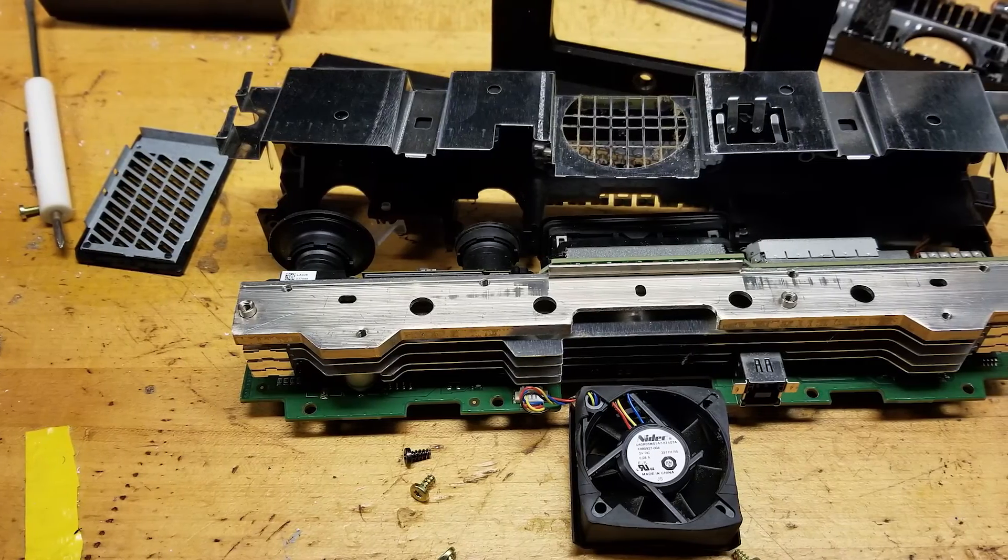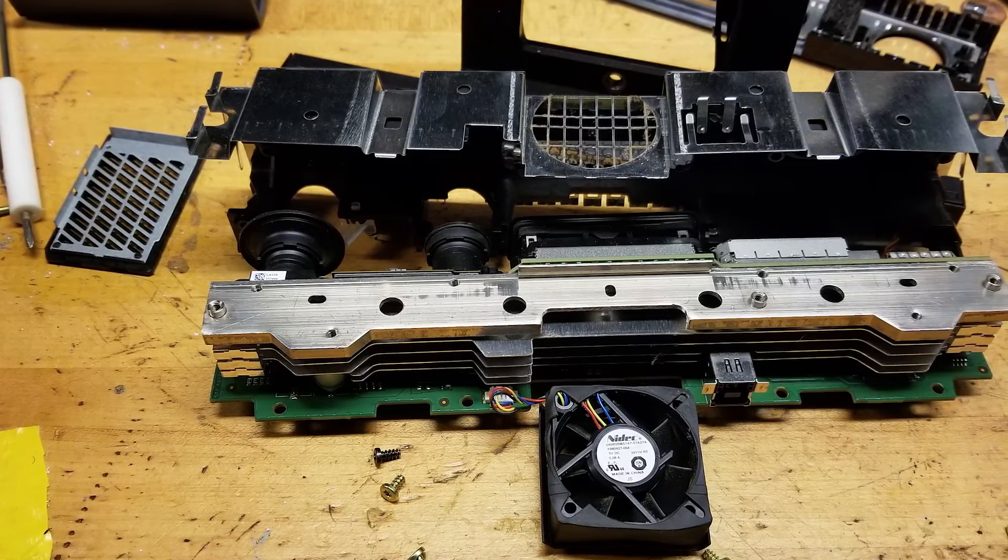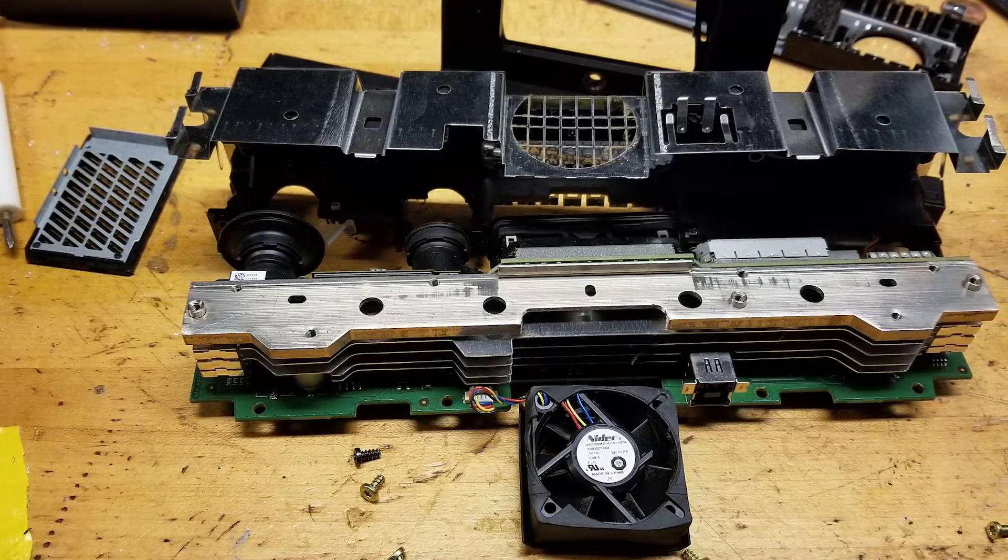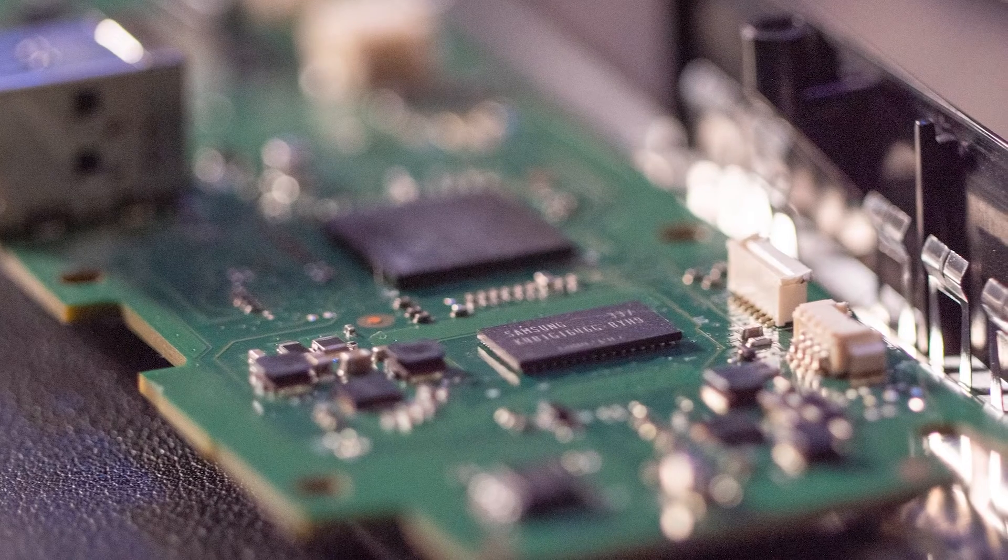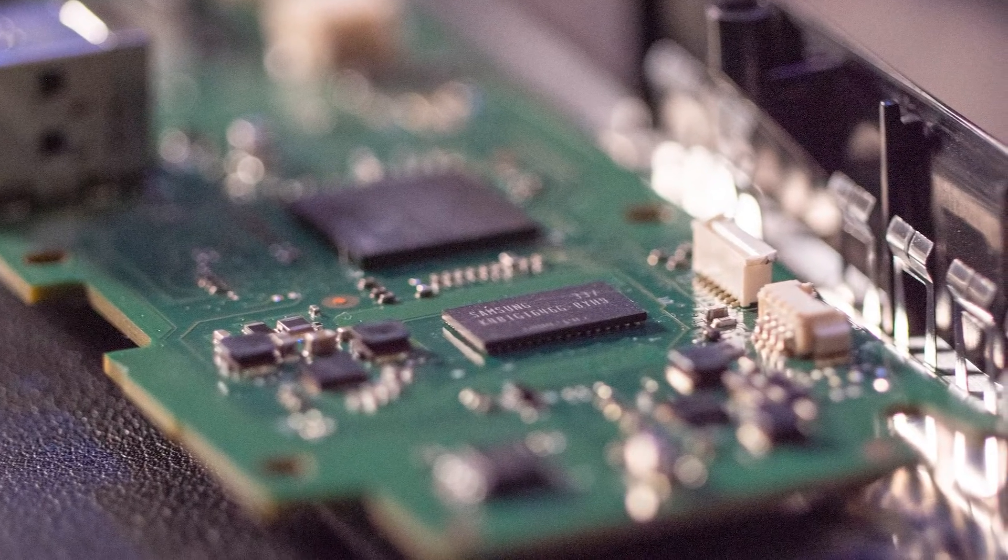With the cover removed, you see a plastic cowling that provides structural support for the fan and power cord as well as some of the other Kinect components. Removing it allows access to the heatsink and the main circuit board.